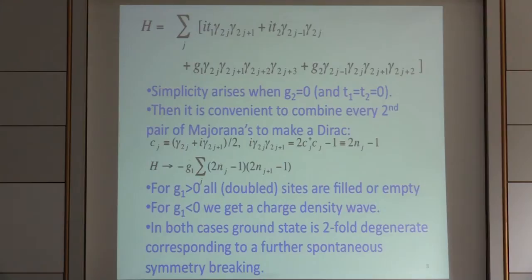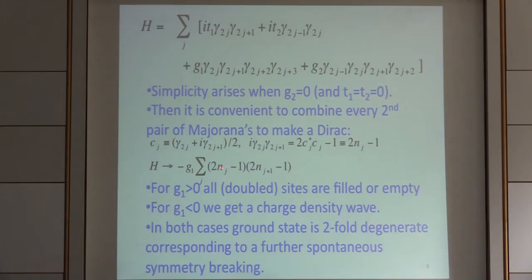The solution is well known and depends strongly on whether G1 is positive or negative. If G1 is positive, we want to make the number positive, so either all sites are empty or all sites are occupied — like a ferromagnetic state. If G1 is negative, we get a charge density wave with electron, no electron alternating, which is like an anti-ferromagnetic state.